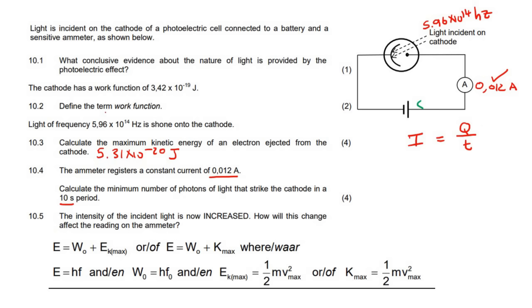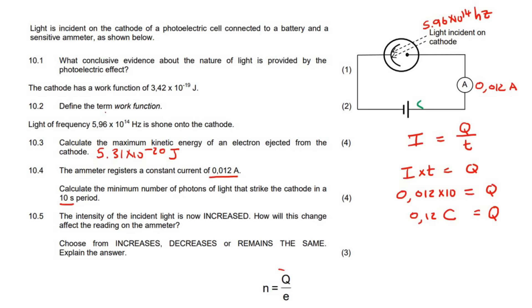You would use the formula as I multiplied by T equals charge. The current is 0.012, the time is 10 seconds. If we work this out, we get 0.12 coulombs. Now, we know that the charge that is coming past is actually electrons. You could then use this formula to see how many electrons. This is the charge, which we've just calculated, and this is the charge of one electron, which is on our formula sheet, and then this is the number of electrons.